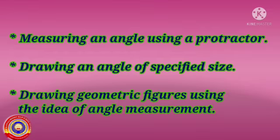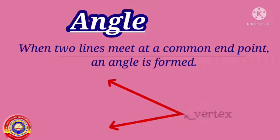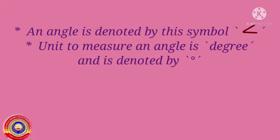Do you know what an angle is? When two lines meet at a common endpoint, an angle is formed. The common endpoint where the two lines meet is called the vertex, and the two lines are called the arms of the angle. An angle is denoted by this symbol.